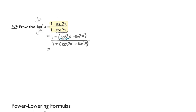I know that cosine squared x is equal to 1 minus sine squared x. So I will replace the cosine squared x with 1 minus sine squared x and rewrite everything else as it was.